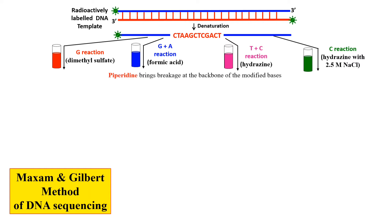We then add piperidine to each reaction. Piperidine breaks the modified bases — wherever a modified base is present in the DNA, it will be cleaved by piperidine. After addition of piperidine, we have different fragments, because piperidine breaks at each modified base position.